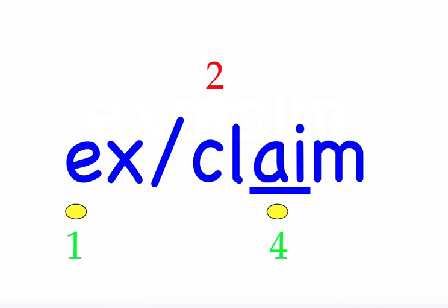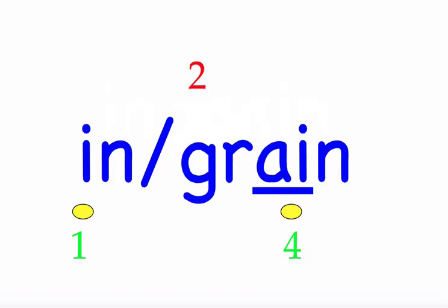The next word is 'ingrain.' I hope to ingrain the rules very soon. First syllable 'in' — two sounds, I-N. Second syllable 'grain' — four sounds, G-R-A-I-N. Mark the word. Ingrain.